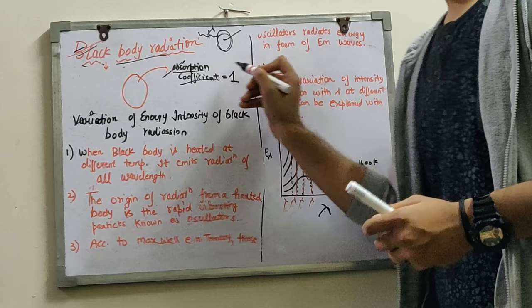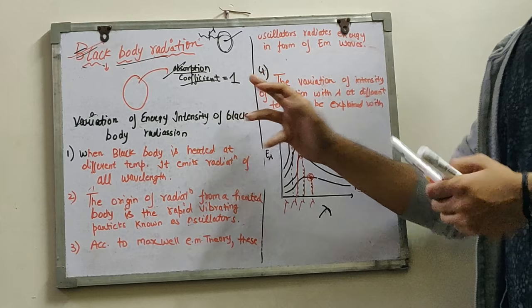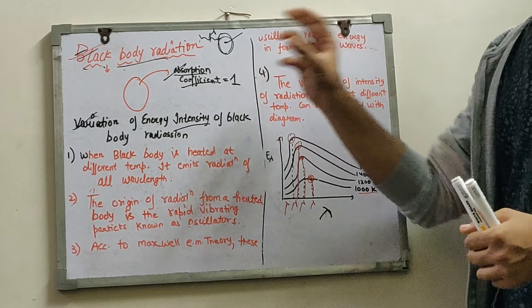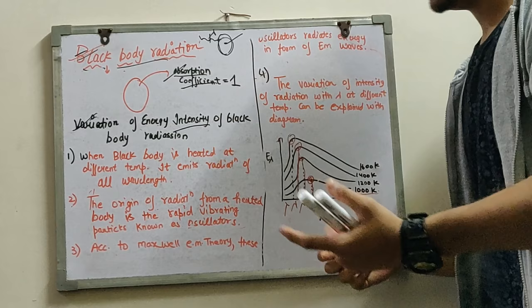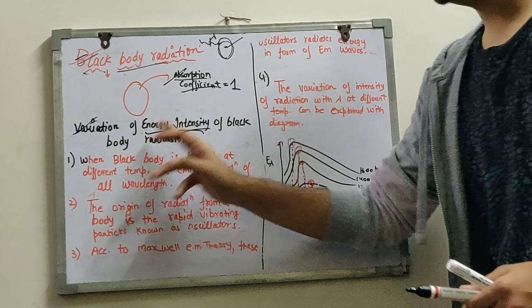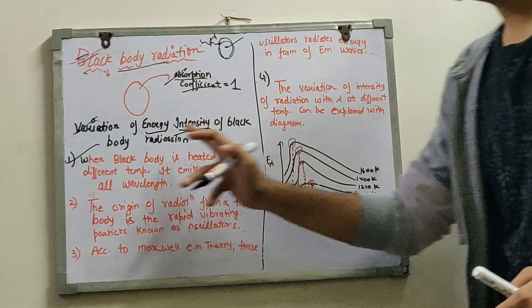The absorption coefficient of a black body is 1, meaning it absorbs all incident radiation. Now let's see the variation of energy intensity of black body radiation. Intensity here means — for example, a CFL bulb has lower intensity compared to a tube light. So the energy intensity will vary, and we will now see how.